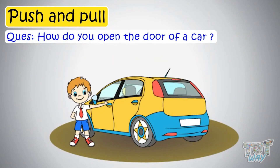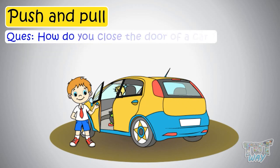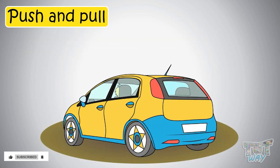Okay kids, how do you open the doors of a car? We always pull the door of the car to open it. And how do you close the door of the car? You always push the door of the car to close it. These are the cases if you are outside the car — the cases will be reversed if you are inside.